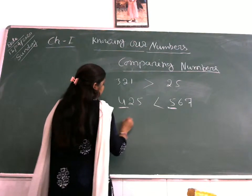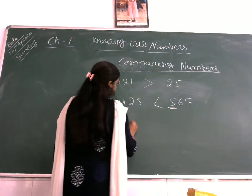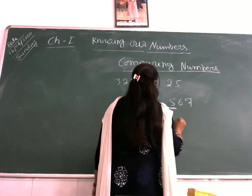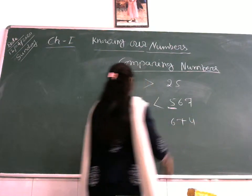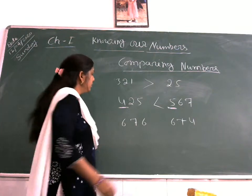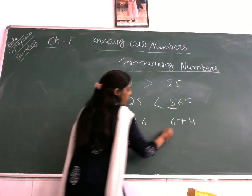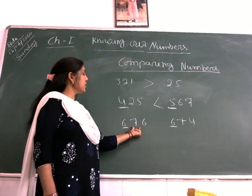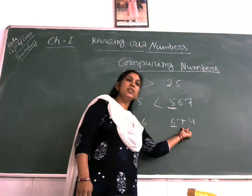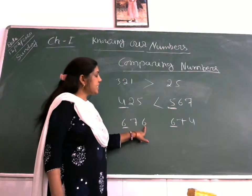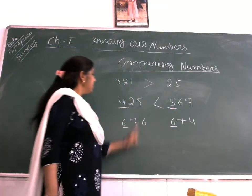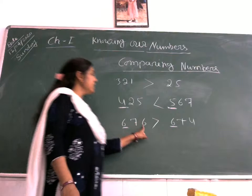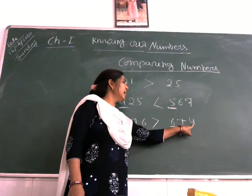One more example: look here. Here is 6 and here is also 6 — both are equal. Next digit: here is 7 and here is 7 — both are equal. Now come to the next digit: here is 6 and here is 4. Since 6 is greater than 4, this number is greater. This is how we compare numbers.